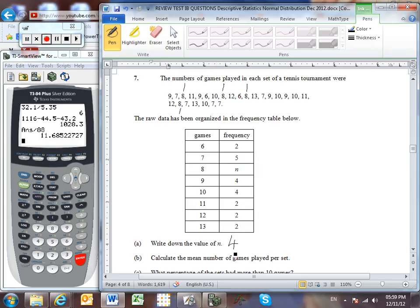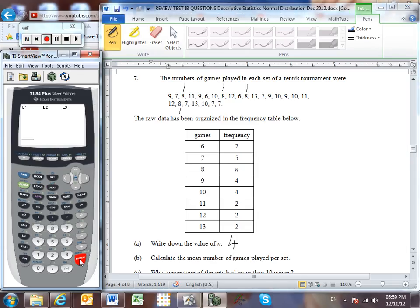Calculate the mean number of games played per set. Well, this is where we're going to want to go into stat and enter our values into list one and list two again. So let's clear our old list, and here we go. So we've got six through 13. And then in list two, which will be the corresponding frequencies, two and five, n was four, and now we've got a couple more fours and three twos. And we should just check that the number of elements in each list match. Yes, they do.